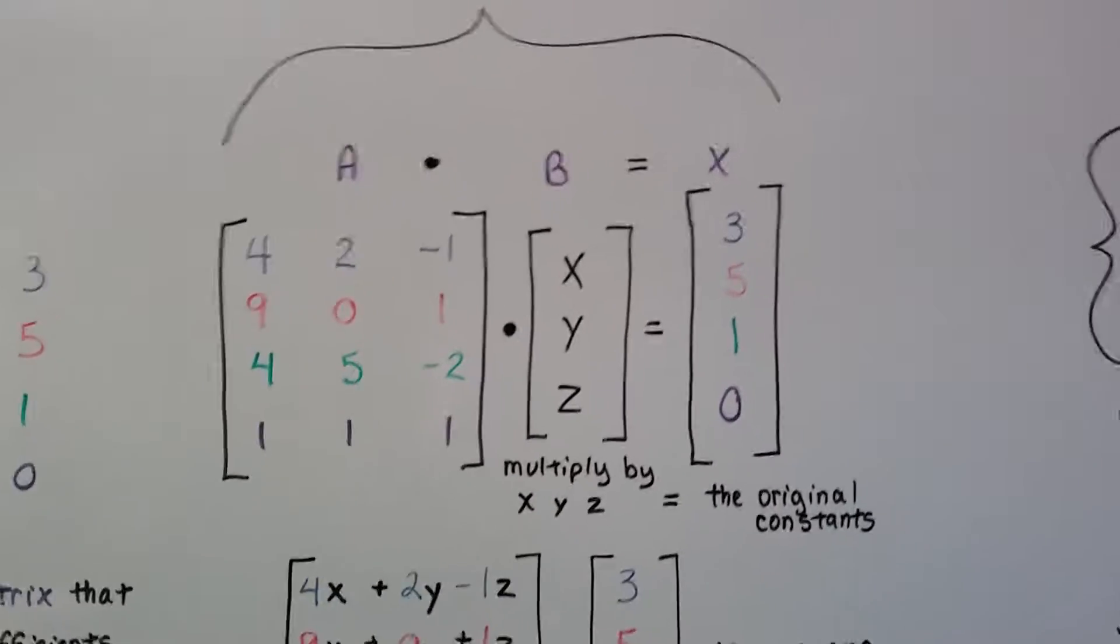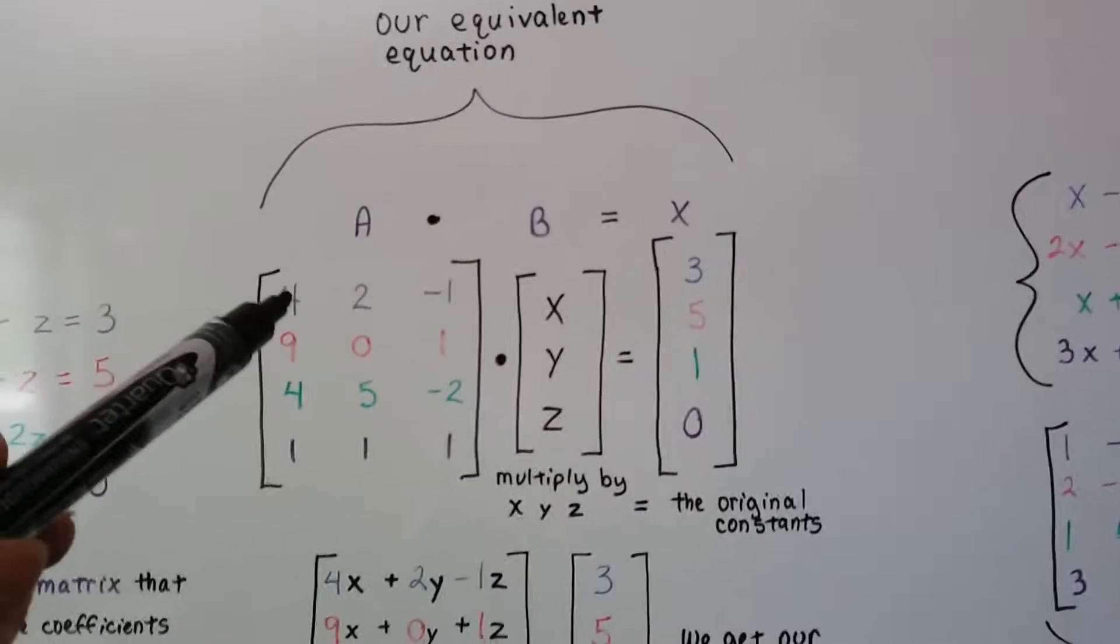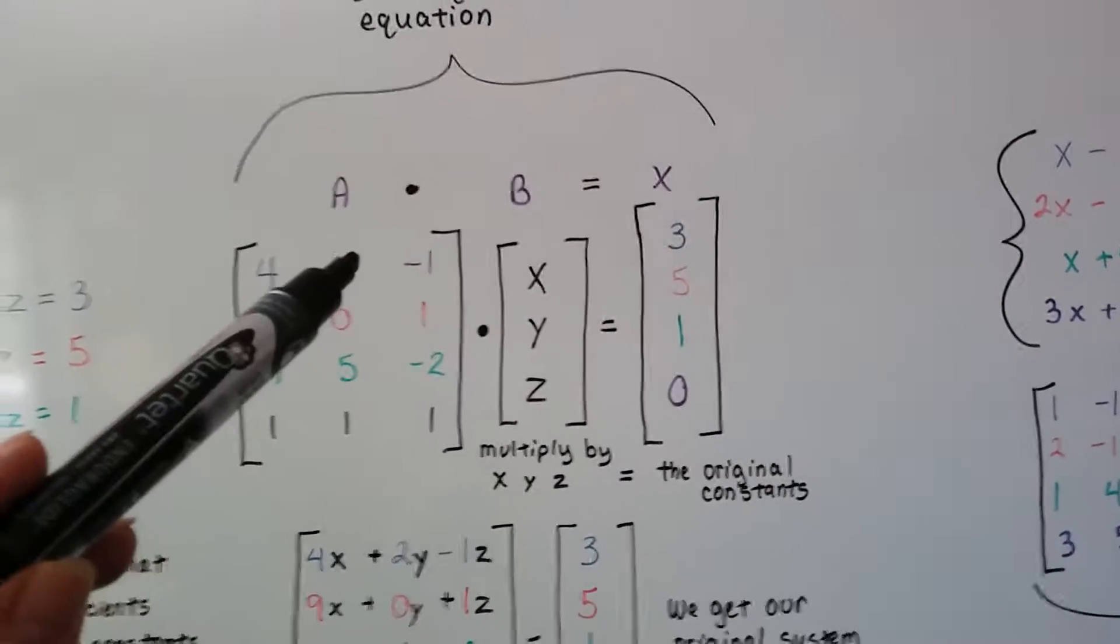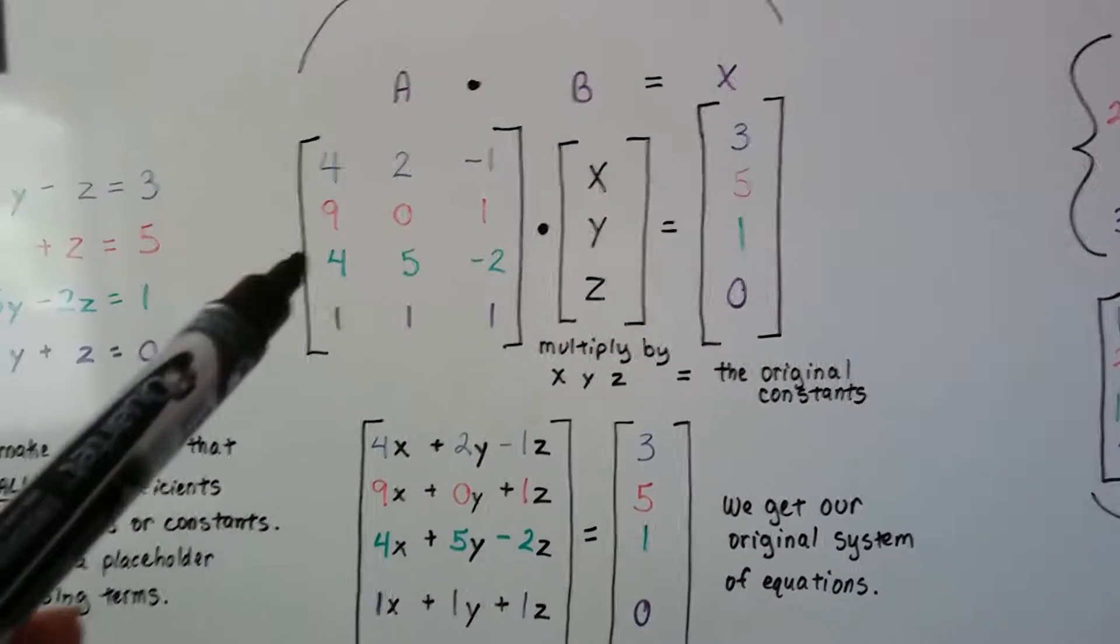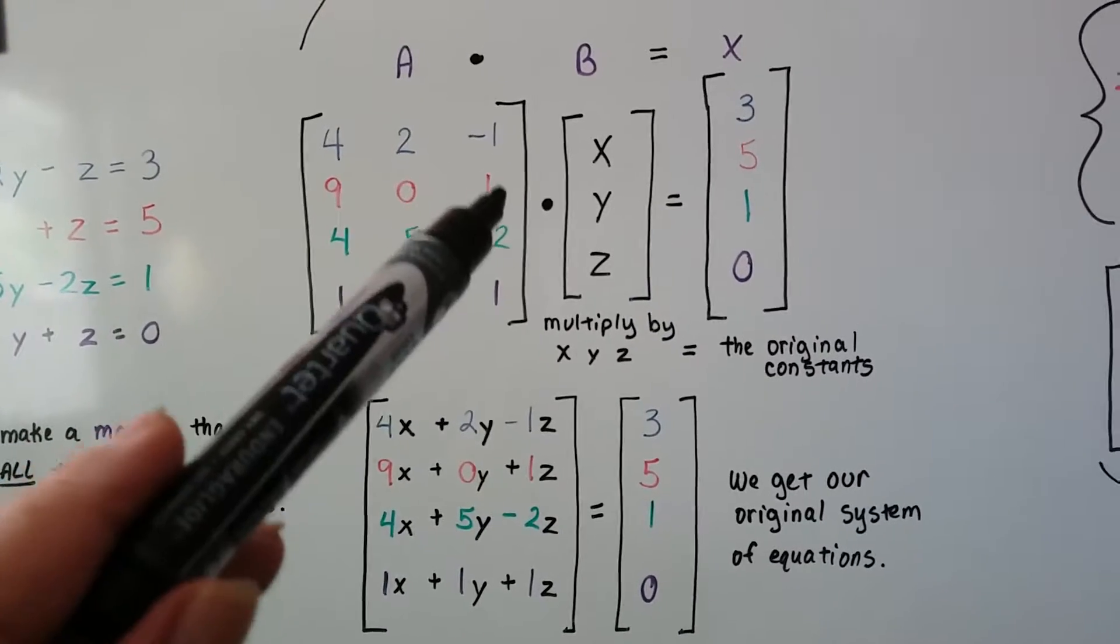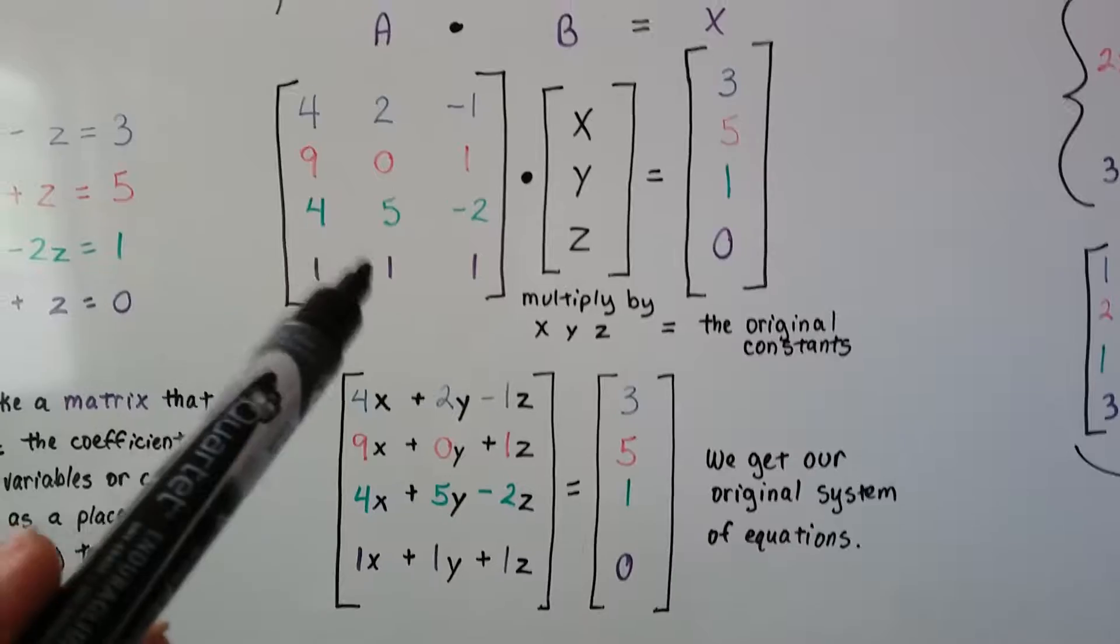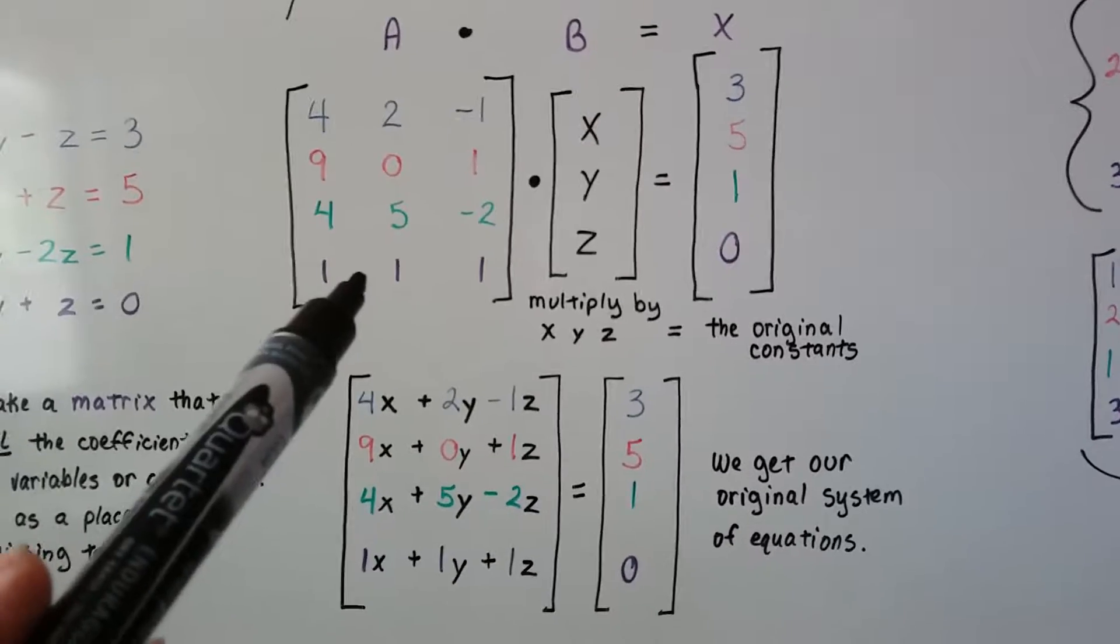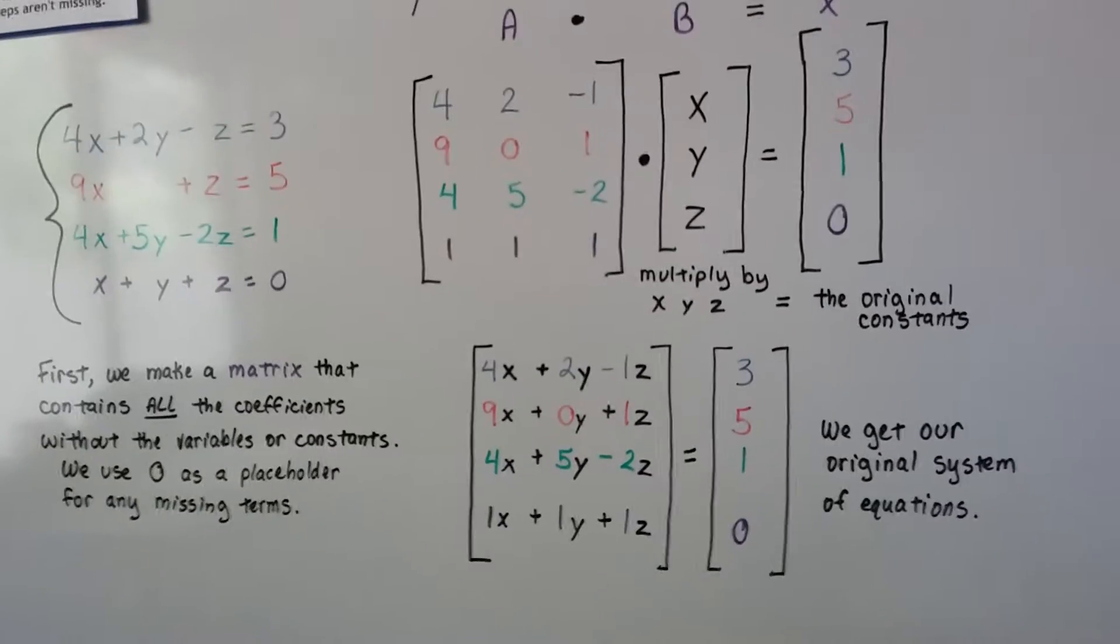Now, if you watched the last couple of videos, you know if we multiply this 4 to this x, and this 2 to this y, and this negative 1 to this z, and then we do the 9 to the x, the 0 to the y, and the 1 to the z, and we slowly do each element of A to B, we're going to get our original system of equations.